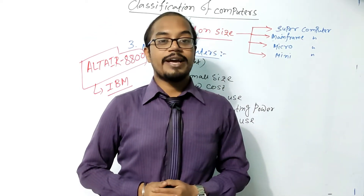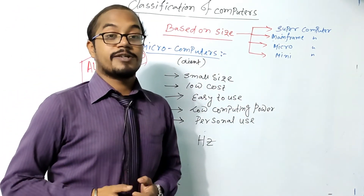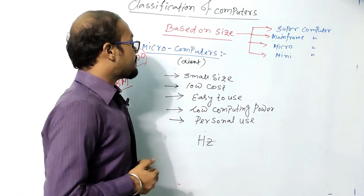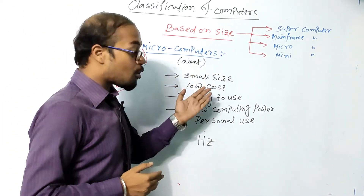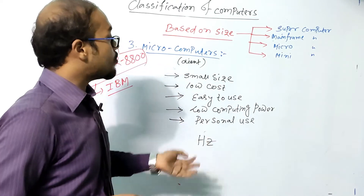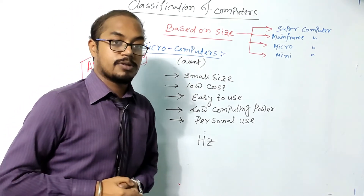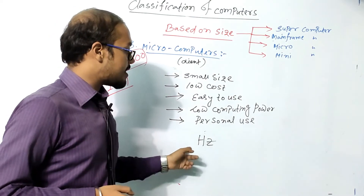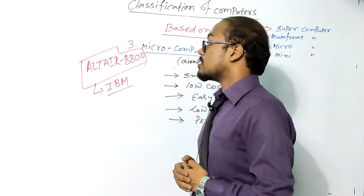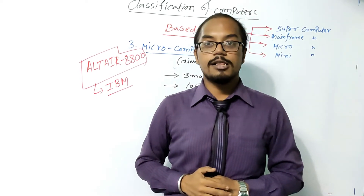Next are microcomputers, which are client computers — personal computers like desktops, laptops, and tablets. Their features include small size, low cost, easy to use, and low computing power compared to mainframe and supercomputers. These are designed for personal use. The frequency unit for microcomputers is Hertz. The first microcomputer in the world was the Altair 8800, developed by IBM.